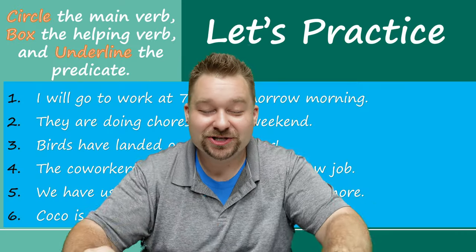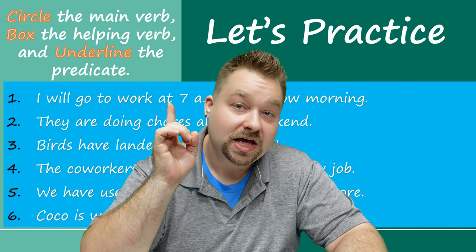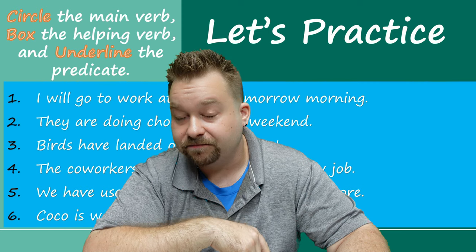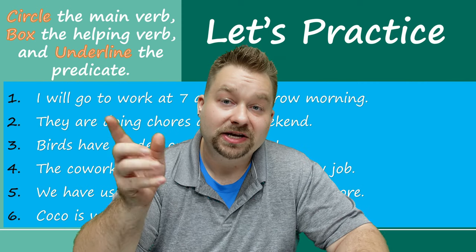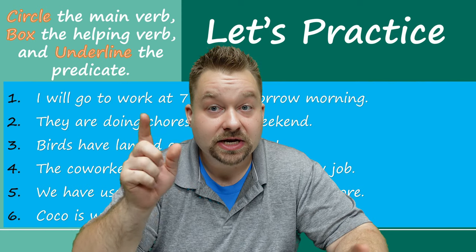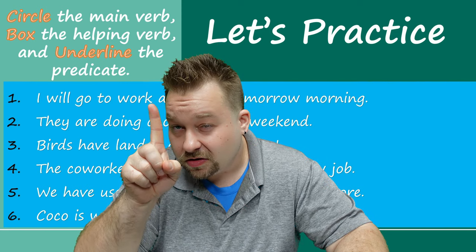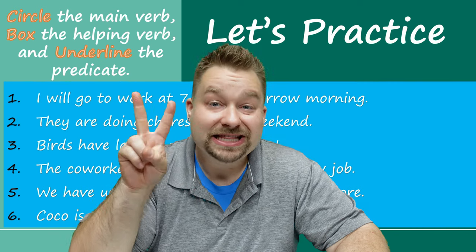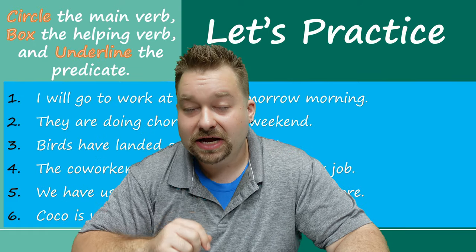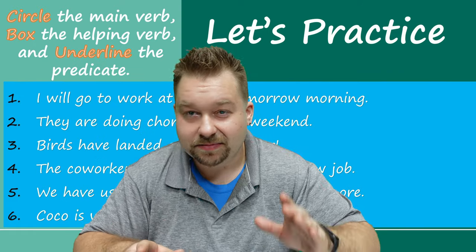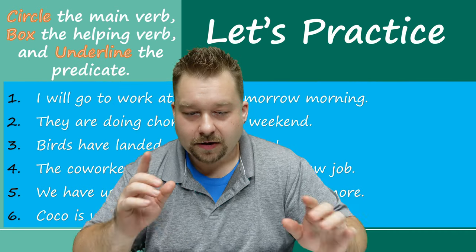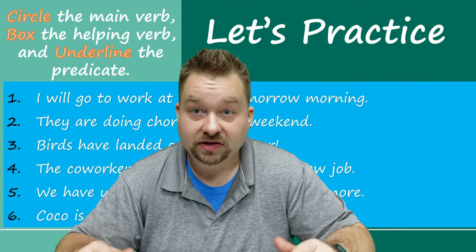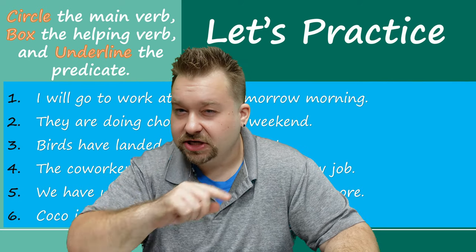Let's practice. I'm pretty sure you understand this now. We have three things we must do in our practice: remember to read the directions. We must circle the main verb, draw a box around the helping verb, and underline the predicate. I want you to see that because the verbs are in the predicate. Now take a minute, pause the video, answer these questions, and when we come back I'll give you the answers.